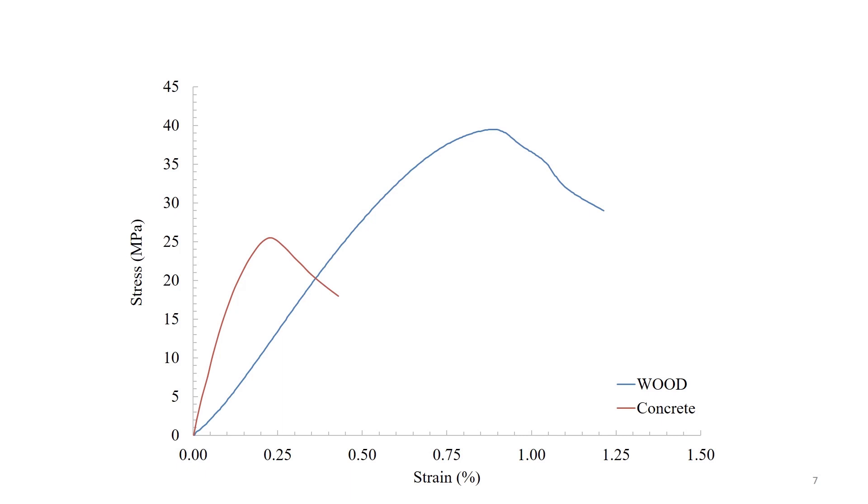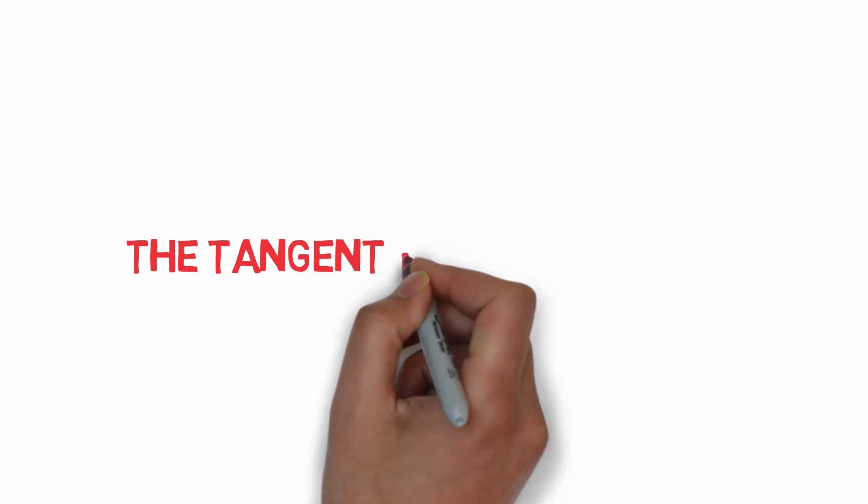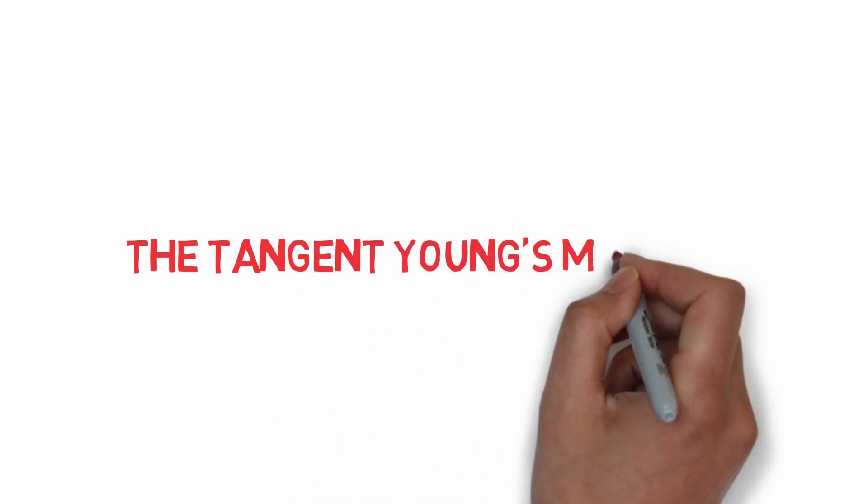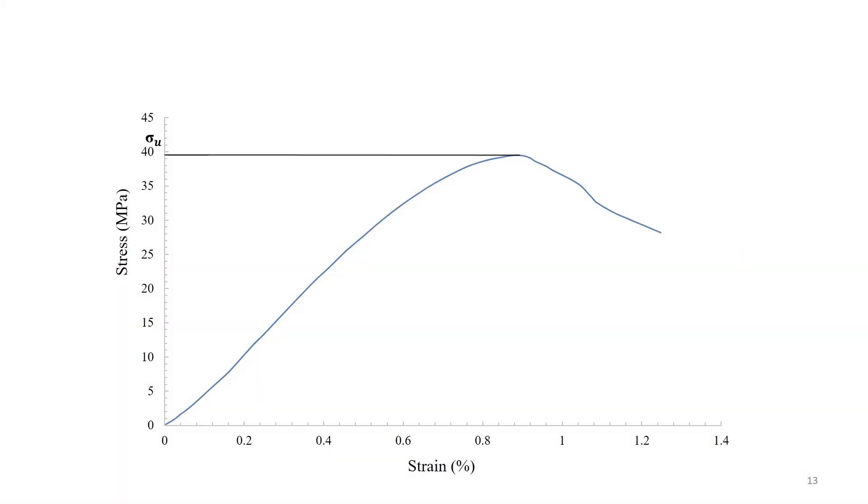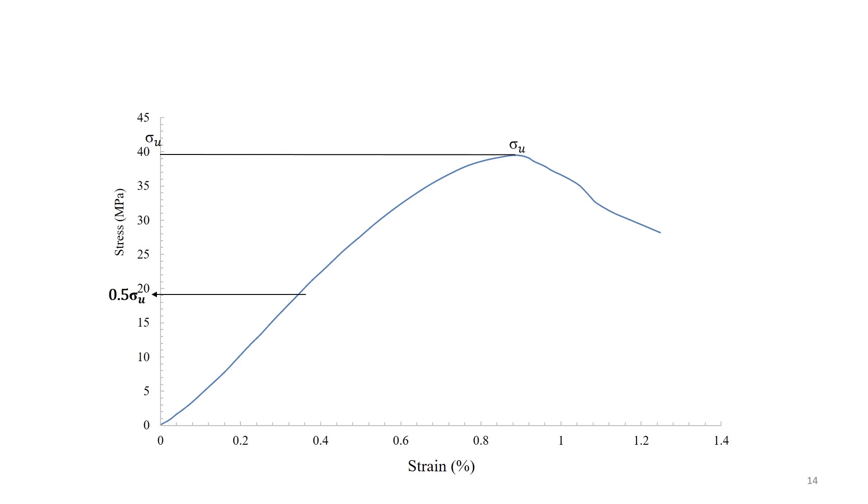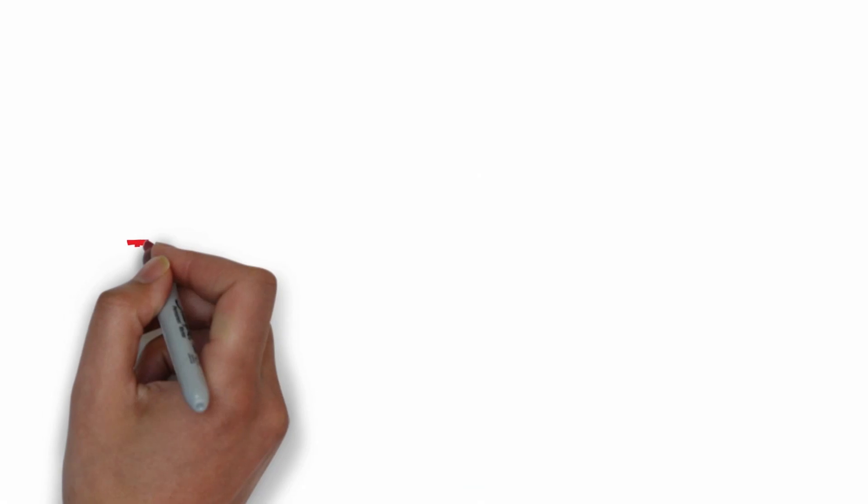Now, we will illustrate two methods of calculation of modulus of elasticity. The first method we are going to look at is the tangent Young's modulus. The tangent Young's modulus is the slope of the stress-strain curve at some percentage of the ultimate strength. It is generally at 50% of the ultimate strength. For example, let's compute the test value of the tangent modulus of elasticity at 50% of the maximum strength for wood.